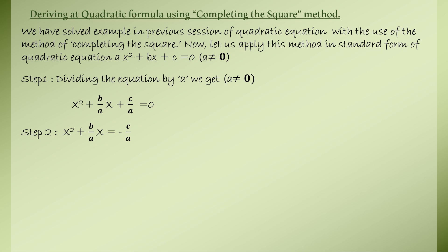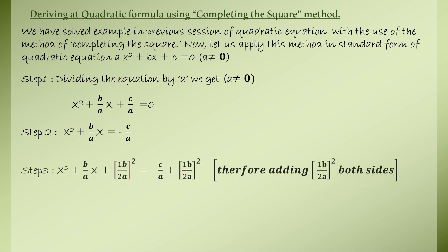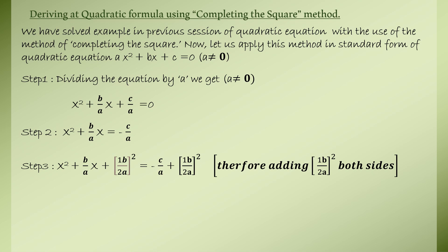As the next step, x squared plus b over a times x equals minus c over a. We have moved c over a to the other side of the equation. As part of the third step, we will be adding b over 2a whole squared on both sides of the equation, so that will not change the equation.